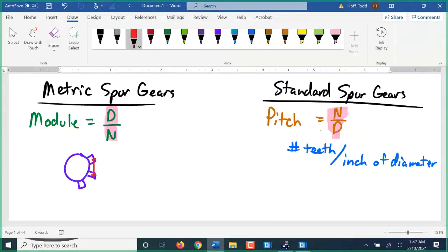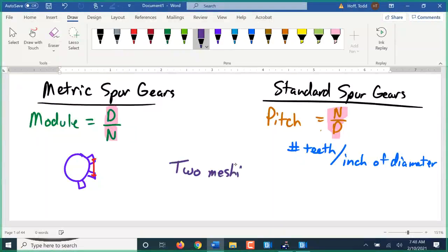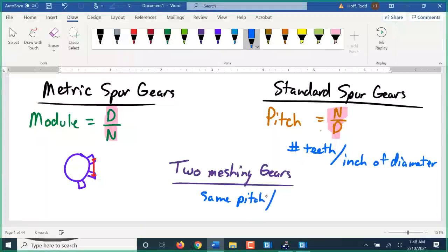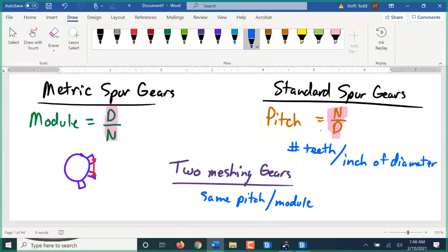The purpose of both of them, both the module and the pitch, is to define how far apart the teeth are to determine if the gears are supposed to mesh. Two gears to mesh, they must have the same pitch or module. Even just a couple thousandths of an inch different in your spacing between teeth, it might work okay at low speeds, but if it gets up to high speeds, they're going to bind up and break.